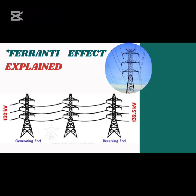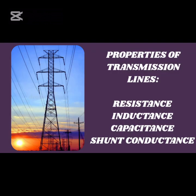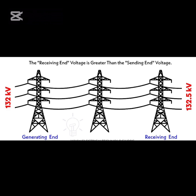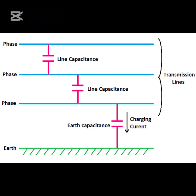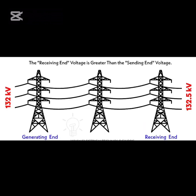Before diving into today's topic, I recommend you check my video on transmission line properties to gain a better understanding of capacitance, inductance, and their relation with today's topic — the link is in the description box below. The Ferranti effect is a phenomenon in which the voltage at the receiving end is greater than the sending end voltage of a transmission line during light load or no load conditions. The rise in voltage is due to more reactive power being generated by the line capacitance than the power being consumed by loads. Note that the Ferranti effect doesn't occur in short transmission lines; it only occurs in medium and long lines.